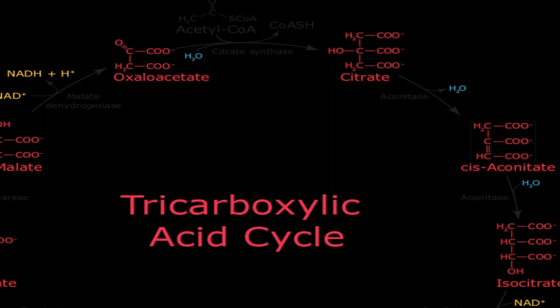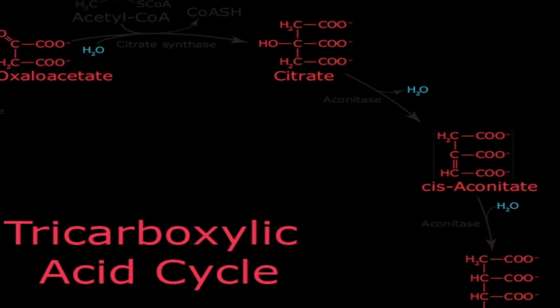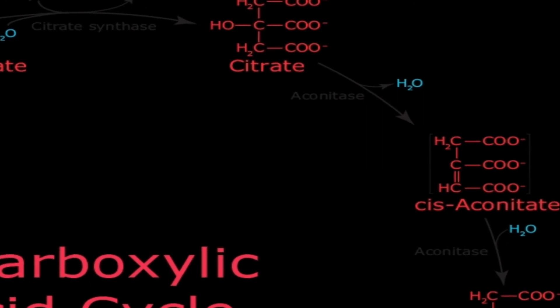Oxaloacetate is a four-carbon compound and acetyl-CoA is a two-carbon compound. These combine to form citrate. Citrate then undergoes isomerization — from citrate, one key step is that it is converted to its isomer, which is isocitrate.